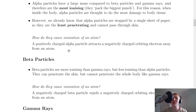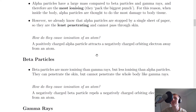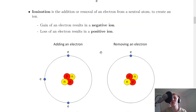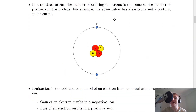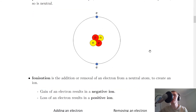How do alpha particles cause ionization of an atom? The positively charged alpha particle attracts a negatively charged orbiting electron away from an atom. Going back to our picture of the neutral atom with two electrons, if the alpha particle passes close to one of these electrons, it can attract it away from that atom, causing the atom to become ionized. That's simply due to a positive charge attracting a negative charge — opposites attract.